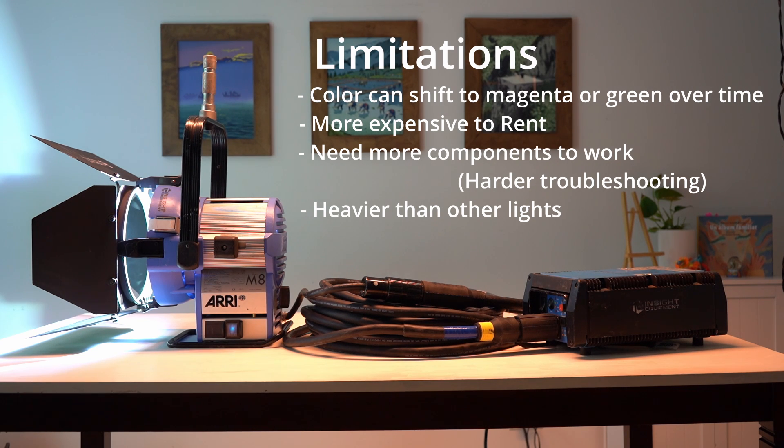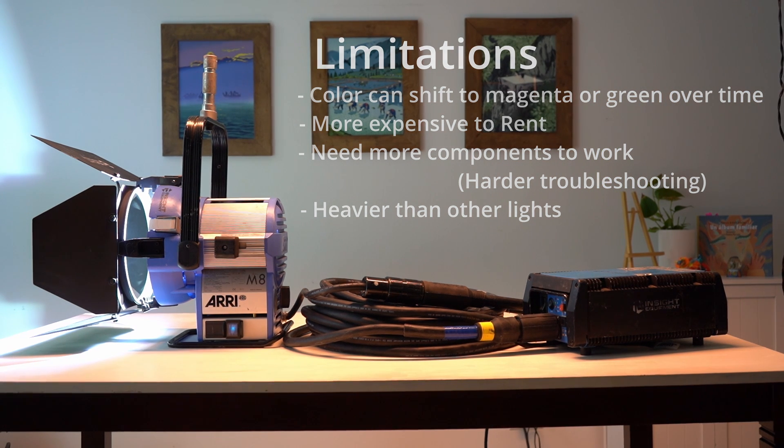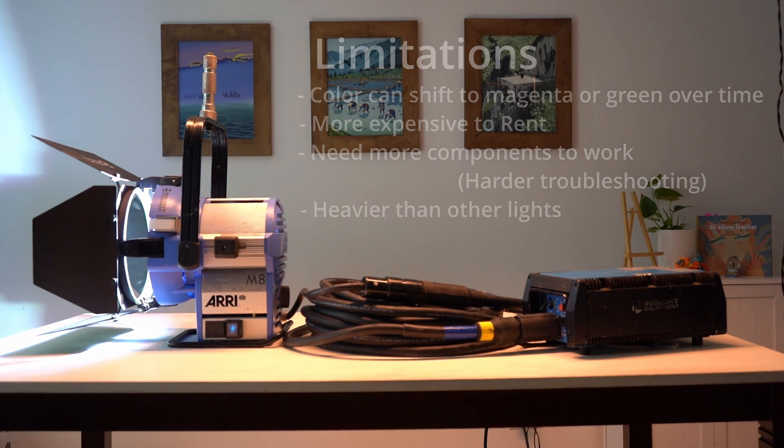But that's it for this tutorial of HMI lights. You can use this method on any HMI system out there. There might be a few differences like putting on the bulb with the double-ended, which you have to open the inside of the light to put the bulb in. But other than that, all HMI lights should work the same way. Thank you guys for watching and I'll see you on the next one. Peace.